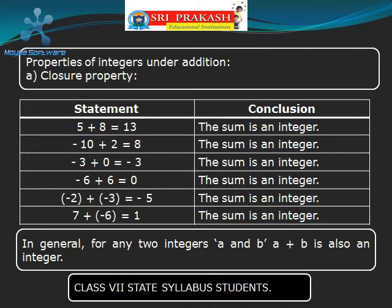So from this we conclude that in general, for any two integers A and B, A plus B is also an integer. This is the Closure Property.